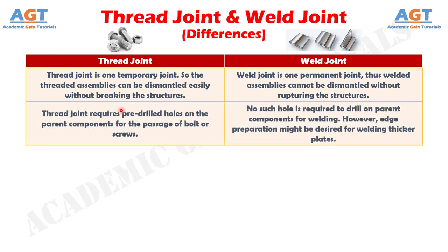Number 2: thread joint requires pre-drilled holes on the parent components for the passage of bolt or screws. Whereas, no such hole is required to drill on parent components for welding. However, edge preparation might be desired for welding thicker plates.